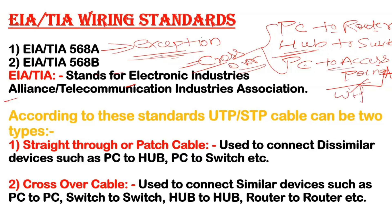PC to access point also requires a crossover cable, because an access point is a Wi-Fi router, and since PC and router are internally similar, a crossover is needed. However, for PC to hub, PC to switch, and switch to router connections, a straight-through cable is needed.